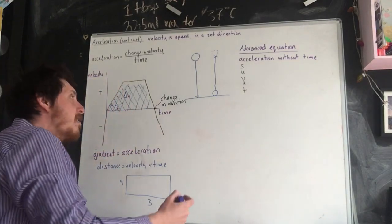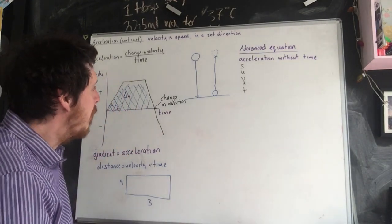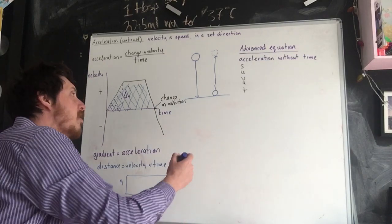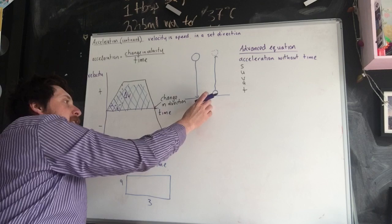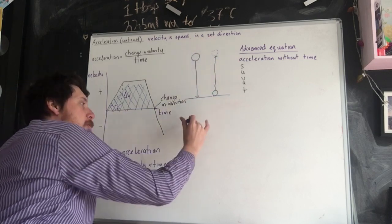Other things that you could be asked to interpret is what a velocity-time graph might look like in this situation. So if we've got a ball that's dropped from rest, hits the surface, and then moves back the other way.